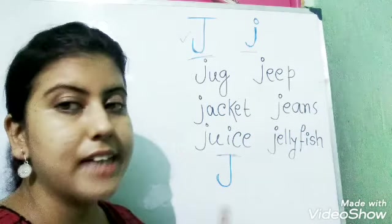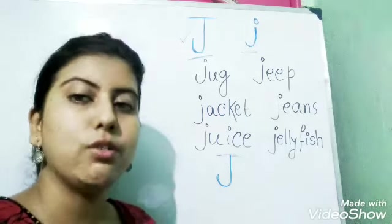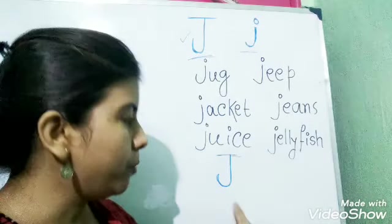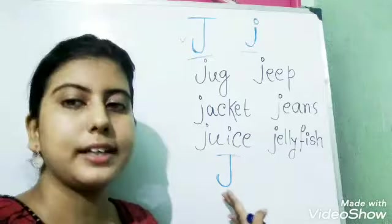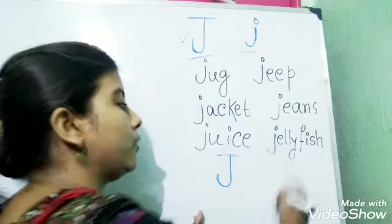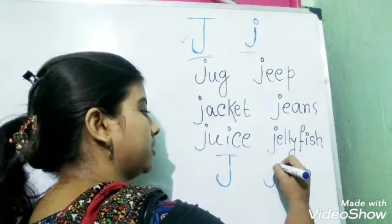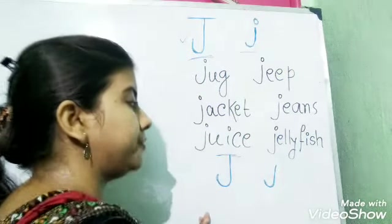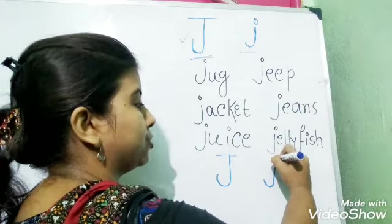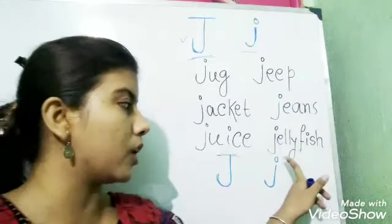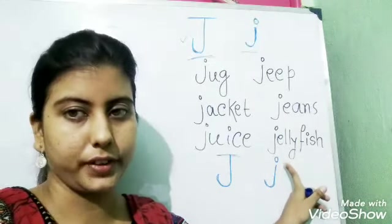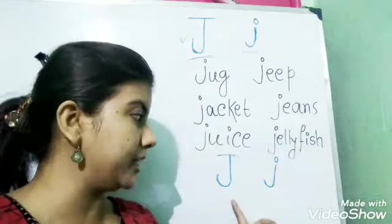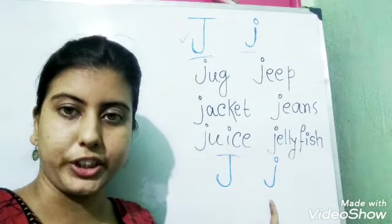This was capital J. Now small j. Small j is almost similar to capital J, but you have to draw a small circle on the top of it. That will be small j. This is capital J and this is small j.